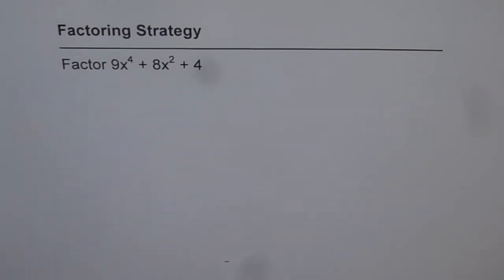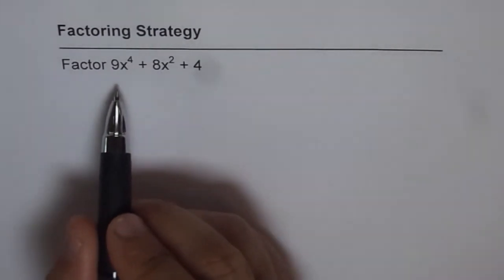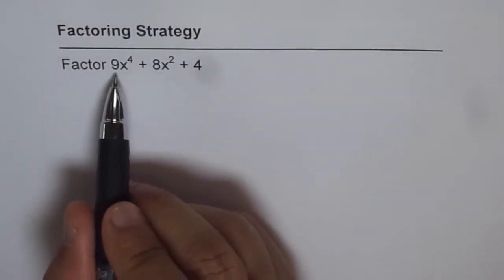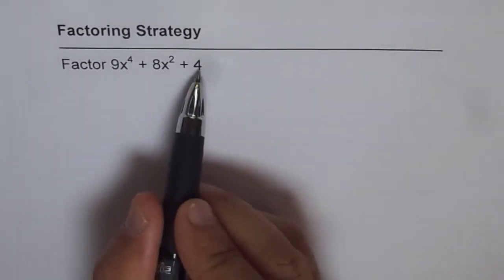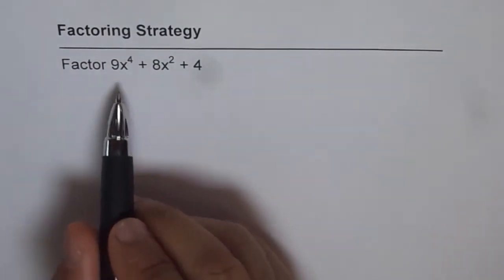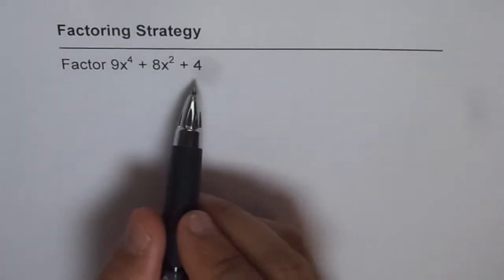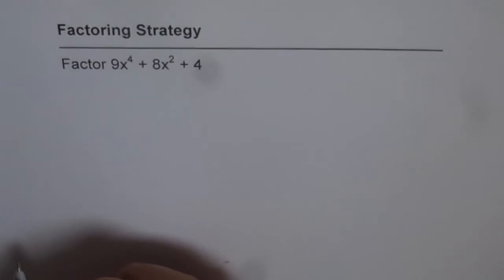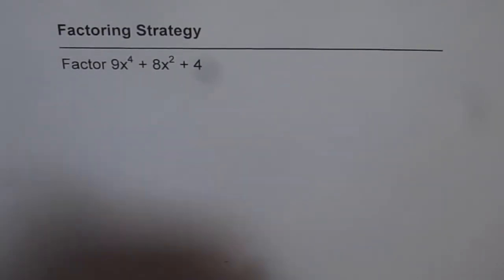Now to factor a trinomial, normally you will try to find two numbers whose product is 9 times 4, which is 36, and sum is 8. But in this combination, it is very difficult to find one. So here is a neat strategy which I call kind of completing the squares, and let us see how to work it out.